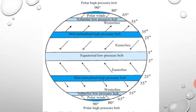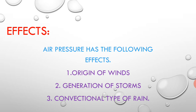Now let's see the effects of air pressure. First, the origin of winds — winds are originated because of air pressure. Second, the generation of storms — storms too are a cause of air pressure. Third, convectional type of rain — the rain mostly received in the equatorial region. Convectional rainfall occurs when the energy of the sun heats the surface of the earth, causing water to evaporate and form water vapour, which then rises and precipitates. Convectional rainfall is thus a result of air pressure.